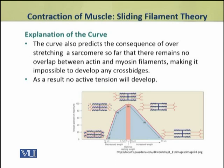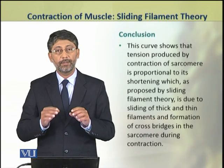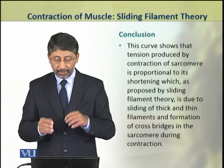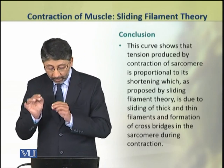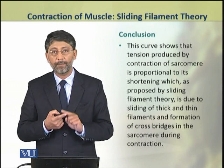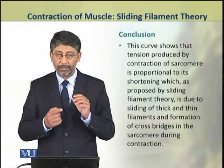Dear students, this curve also predicts a consequence of over-stretching of a sarcomere to the point where there remains no overlap between the actin and myosin filaments. If the muscle is stretched too much, there will be no possibility to form any cross bridges, so no active tension will develop. This curve shows that the tension produced by the contraction of the sarcomere is proportional to its shortening, which according to the sliding filament theory is due to the sliding of thick and thin filaments and the formation of cross bridges in the sarcomere during contraction.